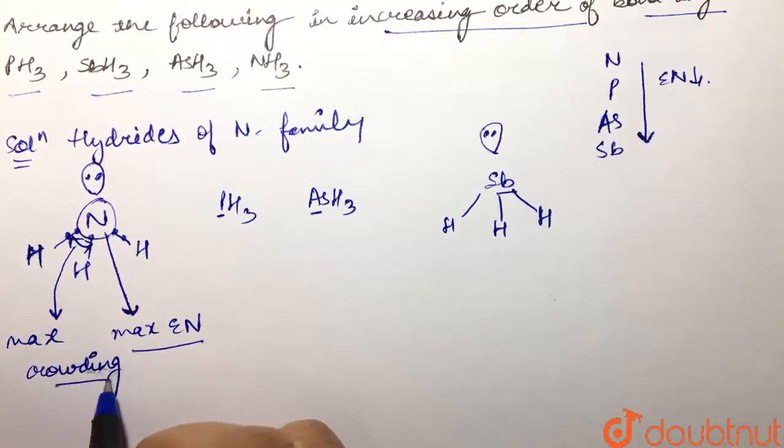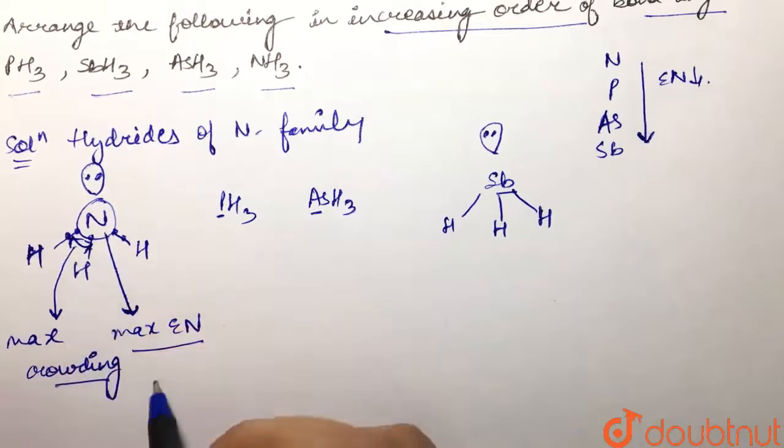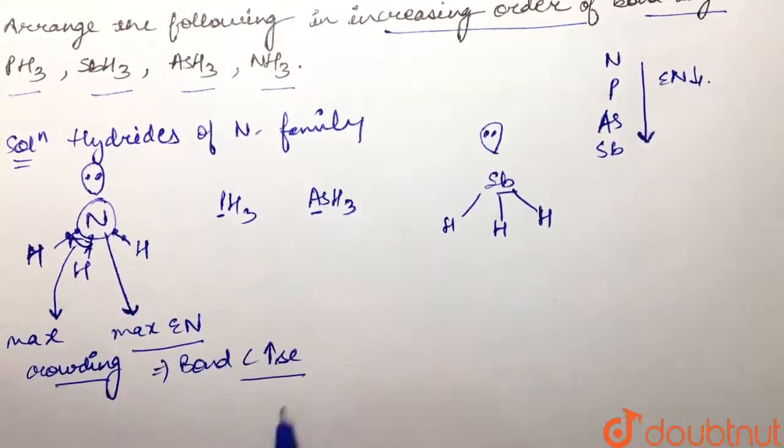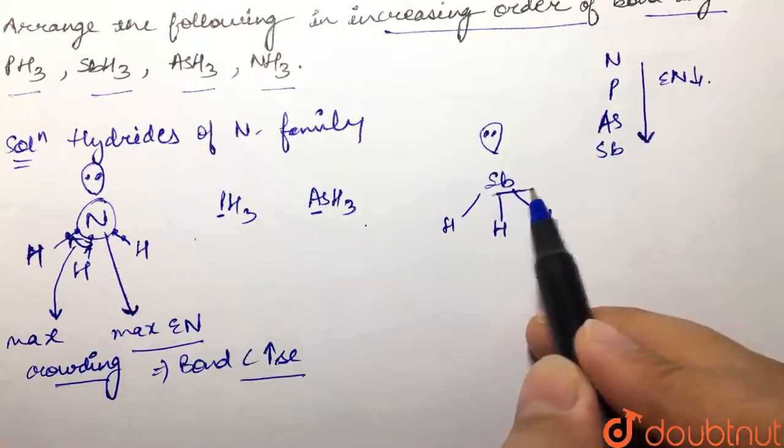Due to which there would be repulsion between these bond pairs, and hence the bond angle would increase. Now as we move down the group in case of SbH3, what is happening?